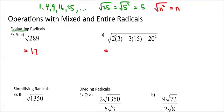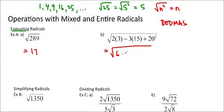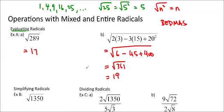If you have a whole bunch of numbers on the inside of the radical, you do have to do those first — we're using BEDMAS. You basically treat the radical like a bracket. So I'm going to do the multiplication first: 2 times 3 is 6, 3 times 15 is 45, and 20 squared is 400. Type that into your calculator — you should get the square root of 361, and the square root of 361 is actually 19. You can use your calculator for this, but I'll probably ask you to show work without a calculator, so you have to show all these steps to get full marks.